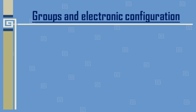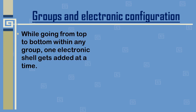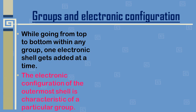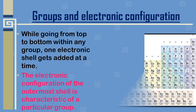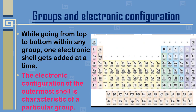First of all, what are groups? These are the vertical columns in the modern periodic table. We have 18 vertical columns known as groups. While going from top to bottom within any group, one electronic shell gets added at a time. The electronic configuration of the outermost shell is characteristic of a particular group, meaning the number of shells goes on increasing as we go down a group.